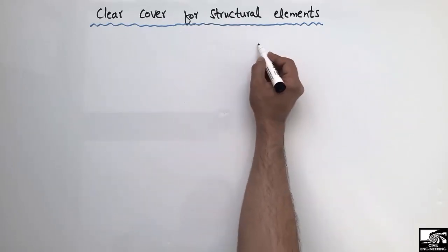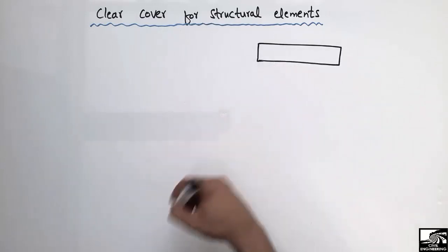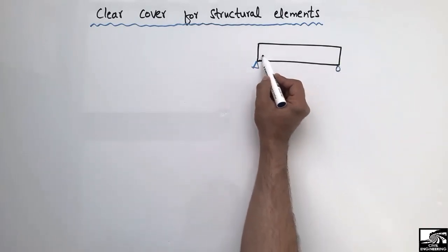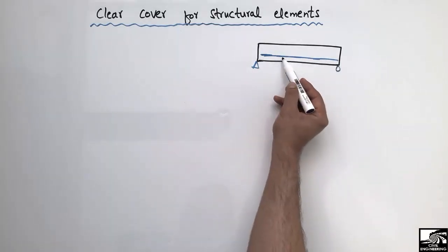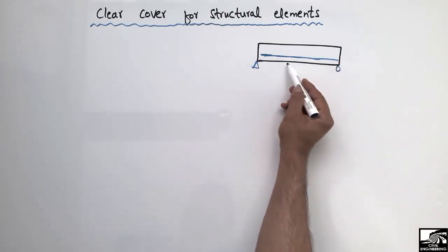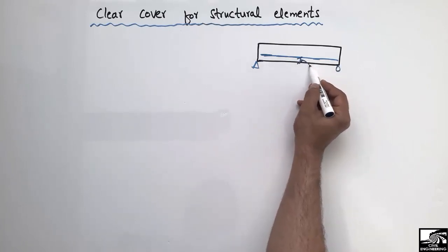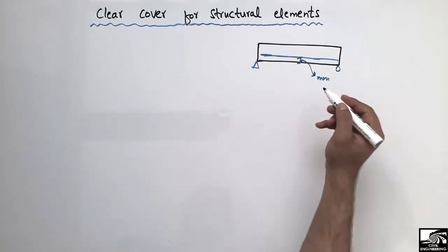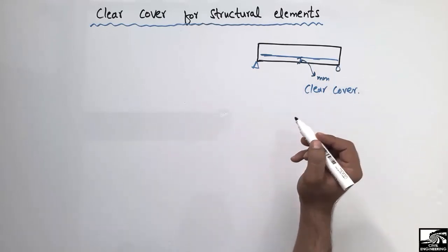Let's take an example of a beam. This is a simply supported beam, and there is reinforcement provided at the bottom of the beam. This reinforcement is always provided at some distance from the bottom of the beam, and this distance in millimeters is called the clear cover.